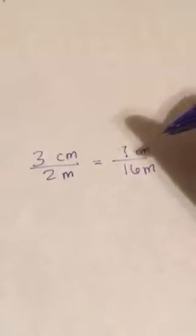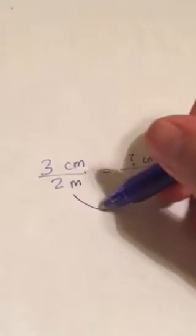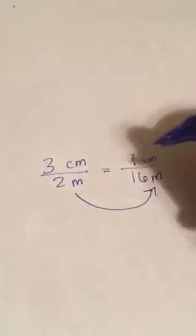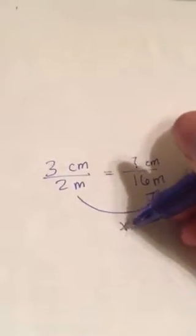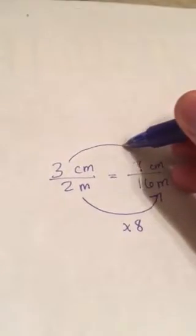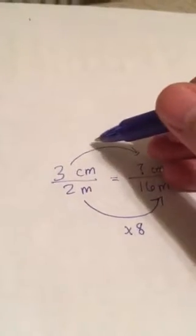Lots of different ways that you can solve this. Easiest of which I think is to compare the corresponding parts. We have to multiply two by eight to get 16. Therefore we do the same thing in the numerator to find the missing piece.